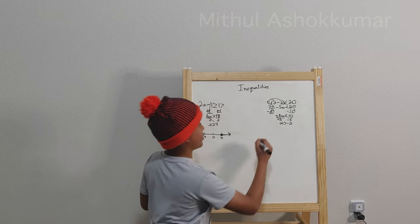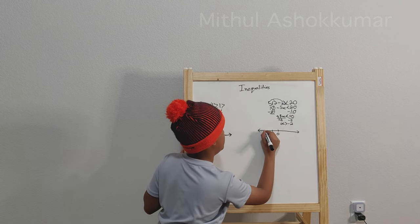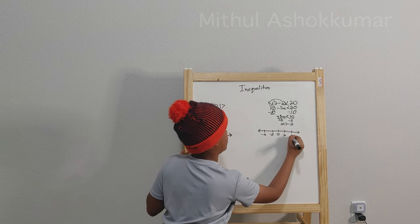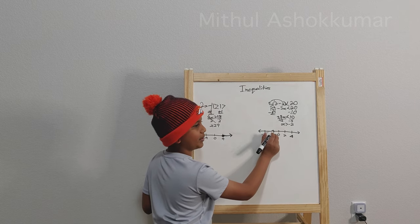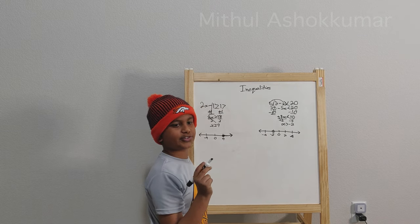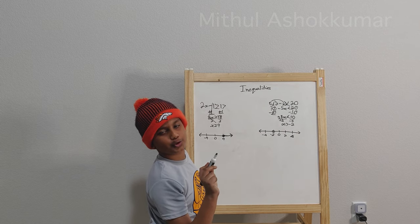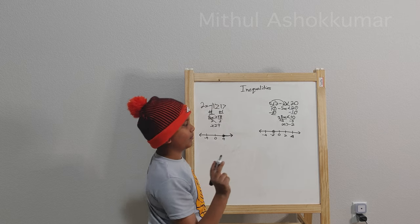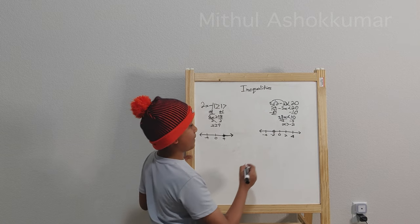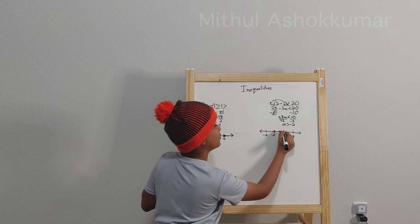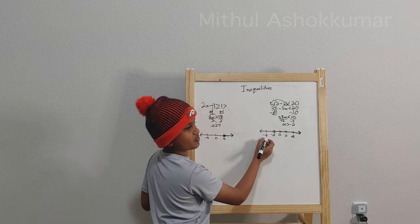We can represent this on the number line. On the number line, we have zero, negative 2, negative 4, 2, and 4. Remember, you always start at the key value. We have an open circle at negative 2 — do not color it in, because we are representing numbers that are greater than negative 2, which does not include negative 2 itself. If you want to represent 1, because 1 is greater than negative 2, you have to go to your right. If you go to your left, you're going the wrong way — those are just smaller values.